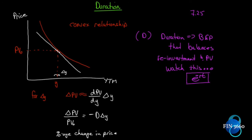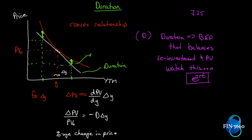But what happens if we have a much larger change in yield? Notice that for a large increase or decrease in yield, we're not getting a very good approximation — we're missing a gap on each side. Duration will only get us so far. One side will undervalue and the other will overvalue because we're off the curve. The tangent line is the duration measure, and to that we would add this section, which is called a convexity adjustment.